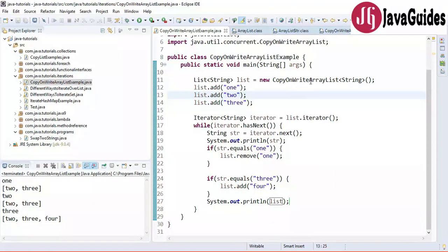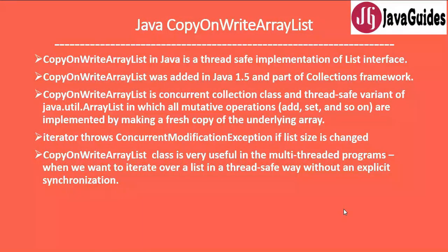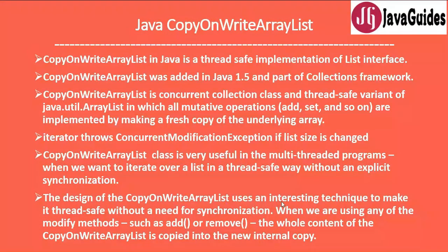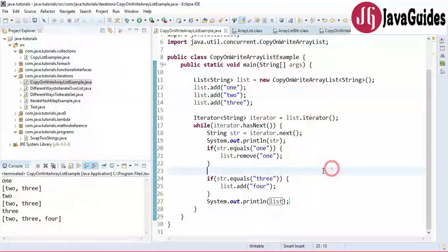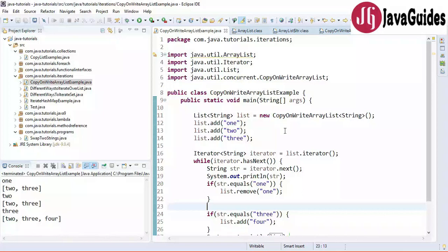This is how we can use CopyOnWriteArrayList to avoid such exceptions. Whenever we use CopyOnWriteArrayList, it makes a fresh copy of the list. CopyOnWriteArrayList is very useful in multi-threaded programs when we want to iterate over a list in a thread-safe way without explicit synchronization. Its design uses an interesting technique — when add or remove is called, the whole content is copied into a new internal array. I hope you understood CopyOnWriteArrayList. Let me know if you have any doubts in the comment section. Thanks for watching, I'll see you in the next video.